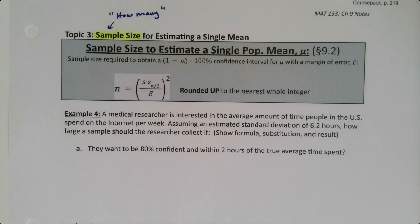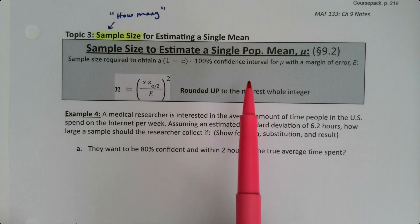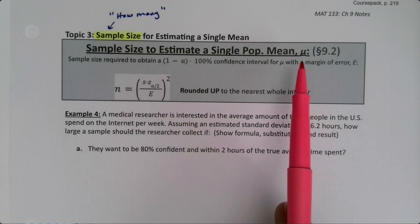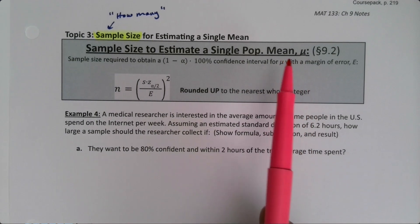We have another sample size formula to learn, but this one is for estimating a mean. The previous two were for estimating a proportion, say like in a survey, what percentage think this or that, but this is for estimating a mean, mu.